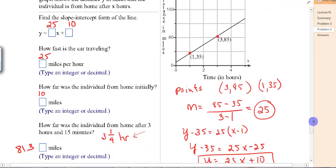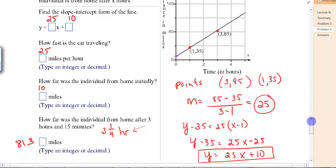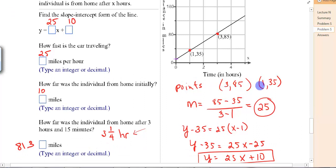Number 10. A person is driving a car on a straight road. The graph shows the distance y in miles that the individual is from home after x hours. We need to note the scales here. This is going by 1, but this appears to be going by 40s. And so in here, this would probably be 10, 20, 30, 40, I would suspect. But anyway, find the slope-intercept form of the line. Well, we have two points. We need a slope. Here's one point. Here is the other point. Let's find the slope. We subtract the y's, subtract the x's. We get 25.